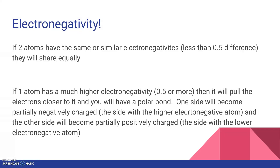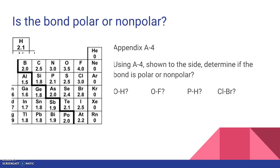The side that is pulling more on the electrons is going to become partially negative, and the other side is going to become partially positive. We're going to use electronegativities, which you can find in Appendix A4. Pause this video if you need to and open up Appendix A4. If you don't have it on you, use the shortened version shown on the slide.